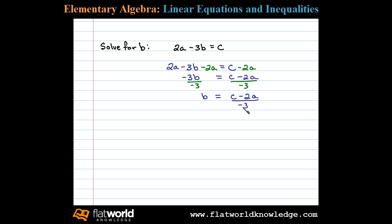But typically we don't leave negative numbers in the denominator, so we can take care of that by putting the negative in front of the fraction bar, leaving us with c minus 2a over 3, but it's going to be negative.